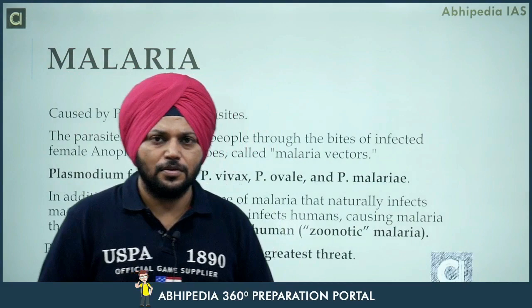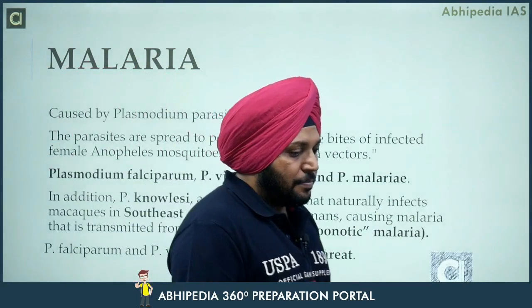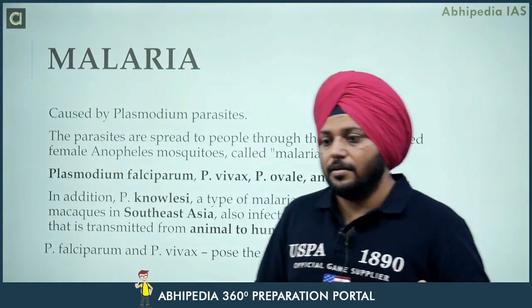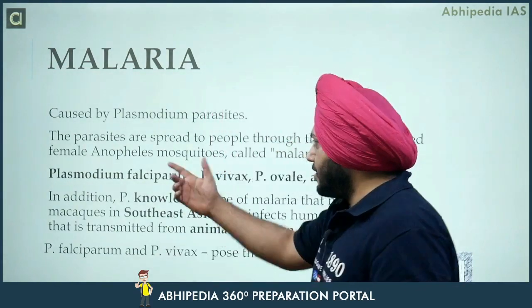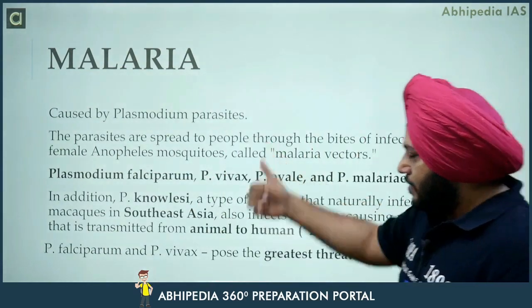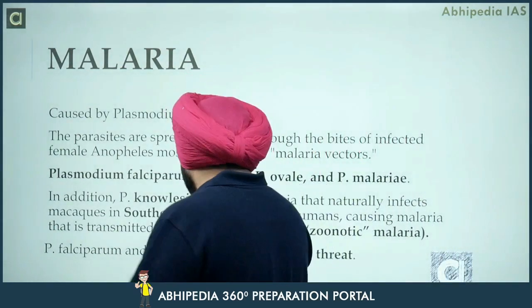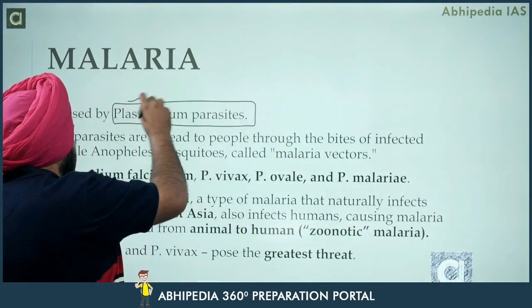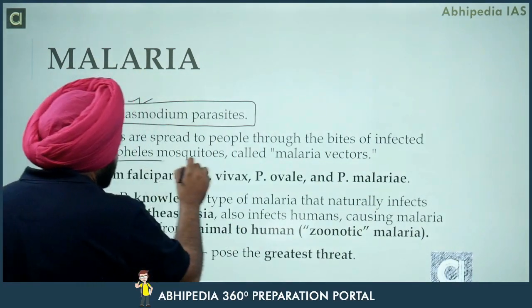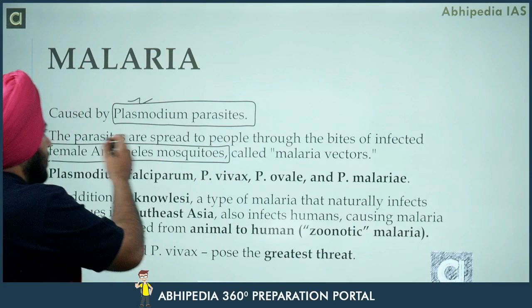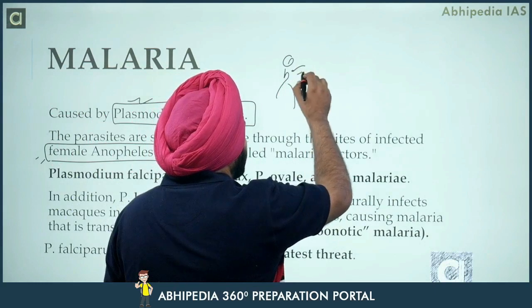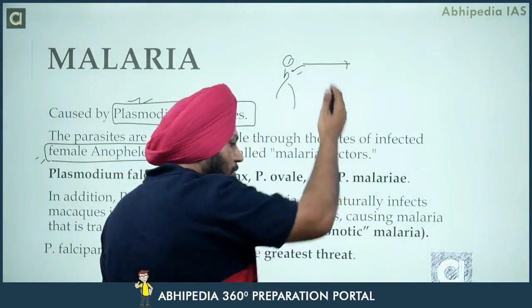The female mosquito is a vector. A vector is something that carries disease. The disease is caused by the plasmodium parasite. The vector is the female Anopheles mosquito. It bites an infected human being.